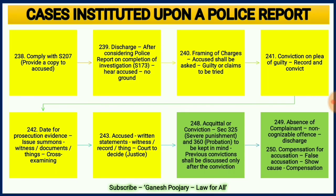Sections 325 and 360 must be kept in mind while giving the conviction punishment. Section 249 says that if the offense is a non-cognizable offense, the court can directly discharge the case when the complainant is absent. Section 250 deals with compensation — if a false accusation is made, the court will issue a show-cause notice, and if the accuser fails to prove those allegations, the court can order compensation for wasting time and money.